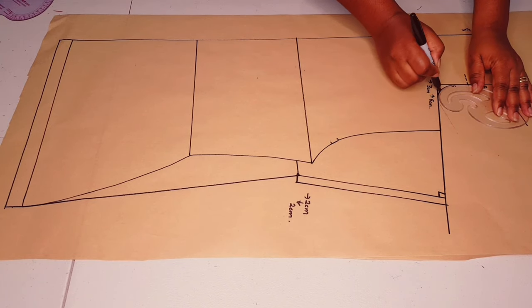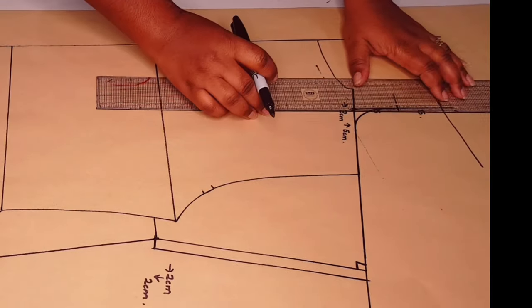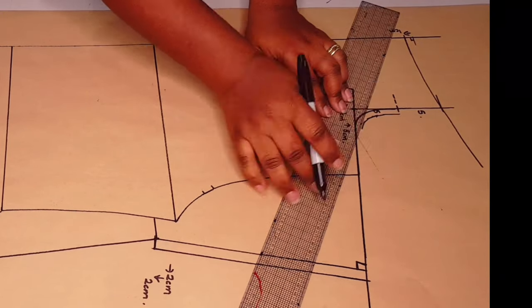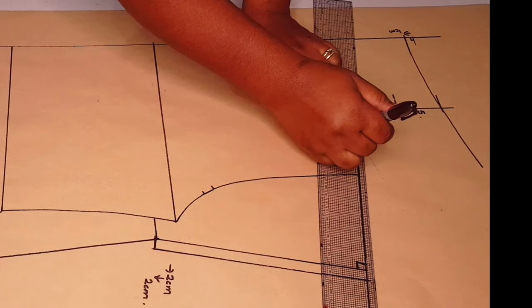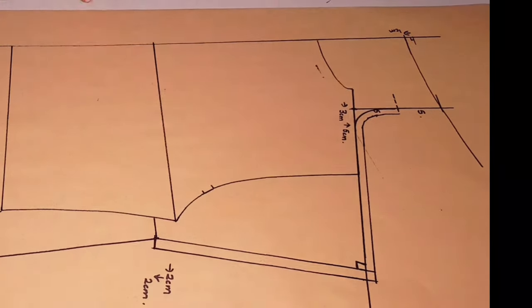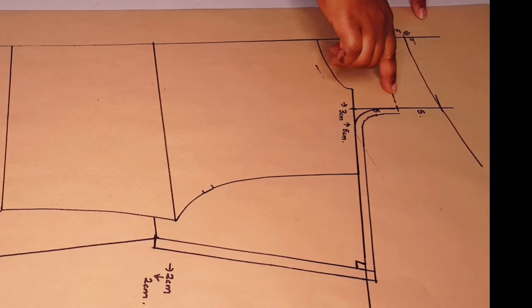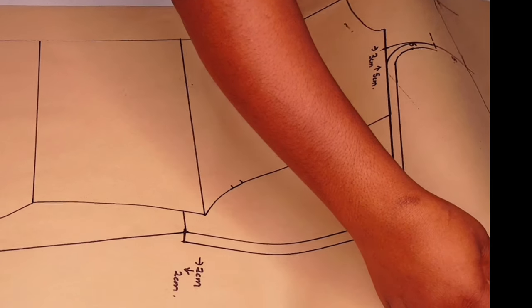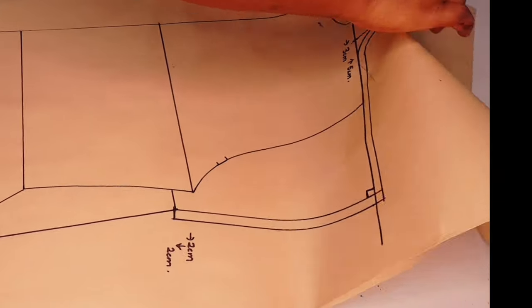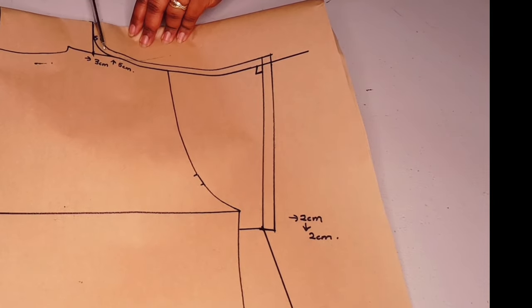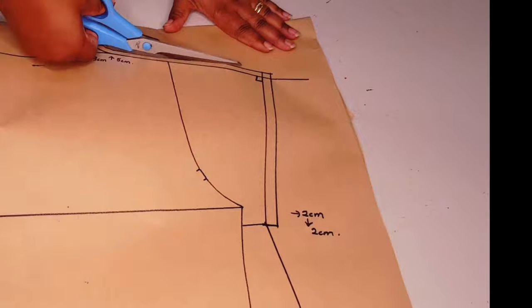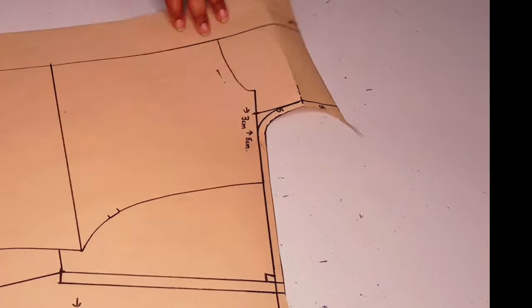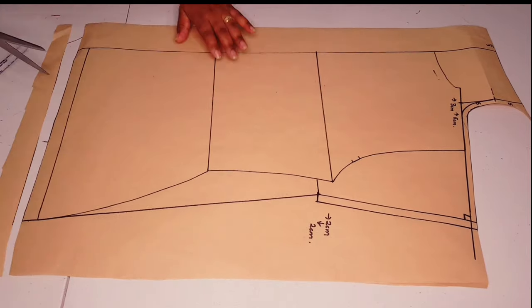With the curved ruler, join these two points. Drawing a nice curve using my French curve. Adding my seam allowance from the neckline all the way to the shoulder, seven millimeters since I'm using a serger. Now using this five centimeter mark, we're going to fold our facing back like it would sit when it's sewn onto the top. Then we're going to cut through this line so we can get a good shaping for our neckline there. Cut around your pattern.